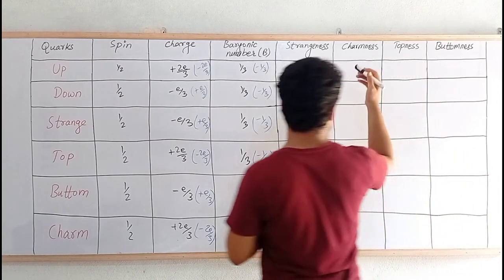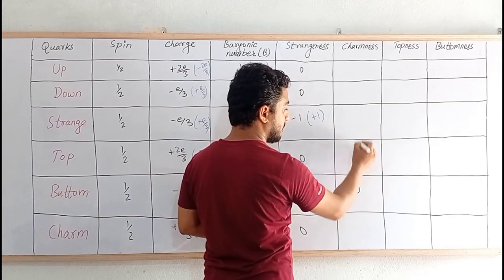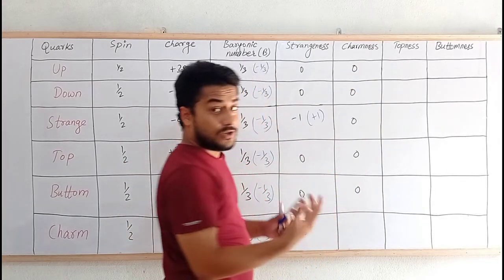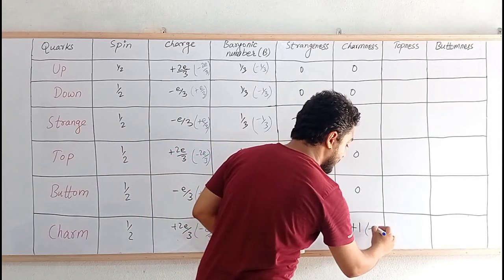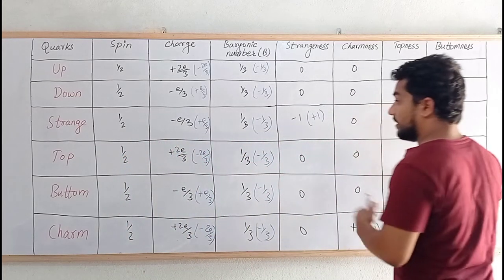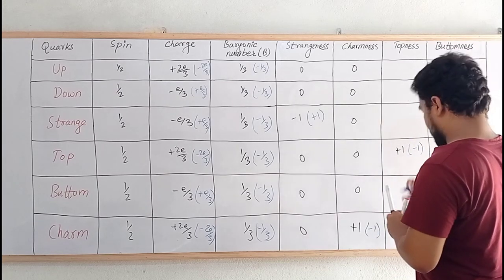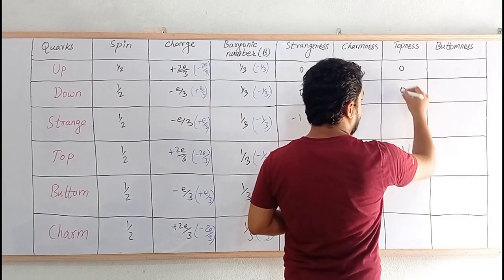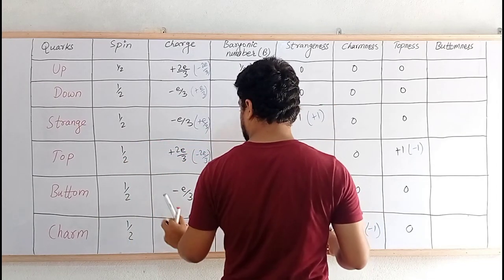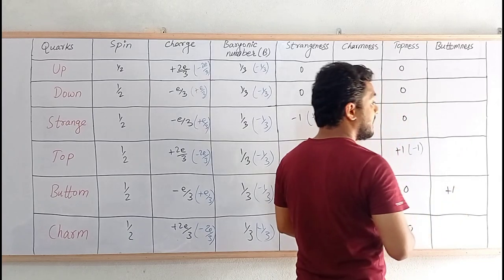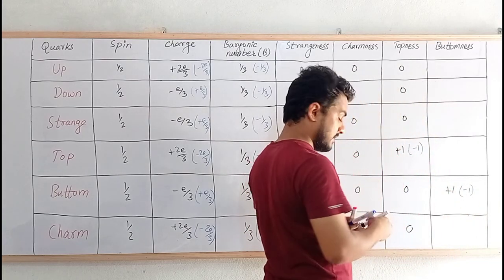Now let's write about charmness. Only the charm quark has charmness; all others have 0. The charm quark has charmness +1 and the anti-charm quark has -1. Similarly, for topness, the top quark has value +1 and the anti-top has value -1, all others have 0. For bottomness, the bottom quark has value -1, the anti-bottom quark has value -1, and the remaining all possess 0.